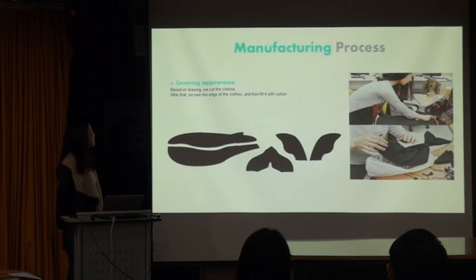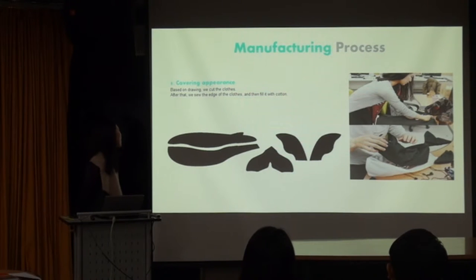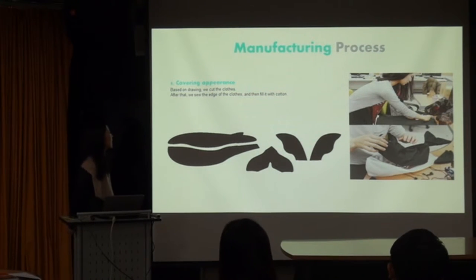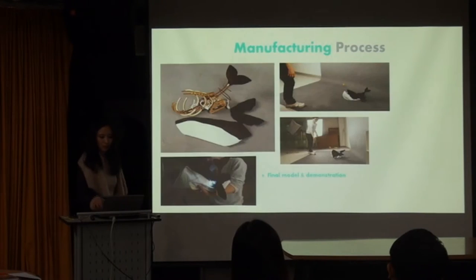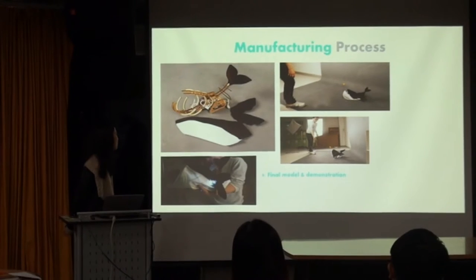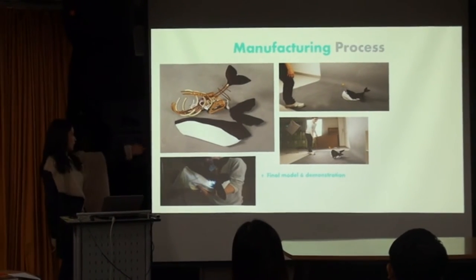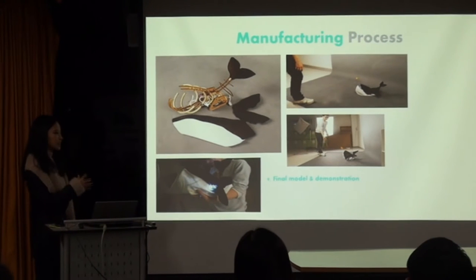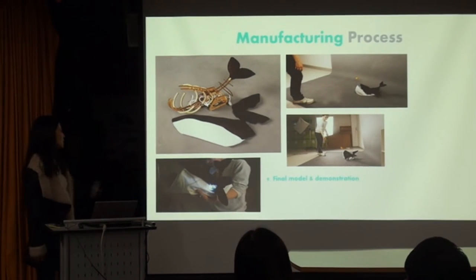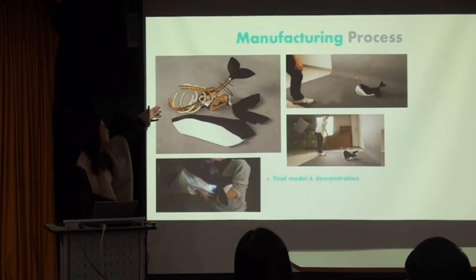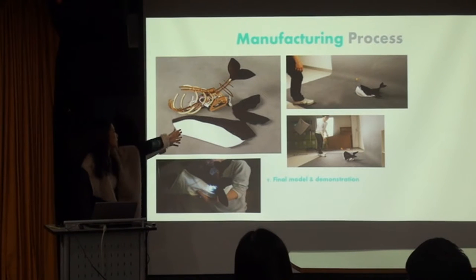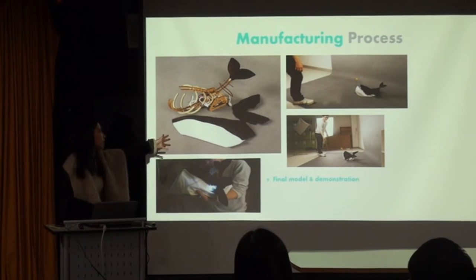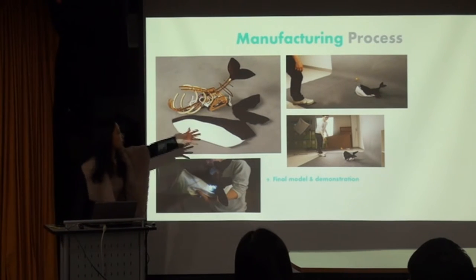For covering the appearance, based on the drawing, we cut the cloth, started the edge of the cloth, and then filled it with cotton. This is our final model and demonstration. As you can see, the picture is on the left. As I said before, we wanted to provide an assembly kit, so this is the inner structure, and this is the covering appearance — the picture is on the right.